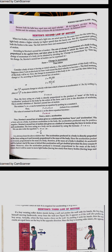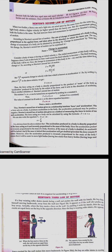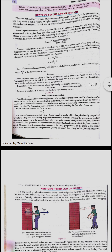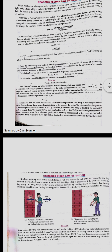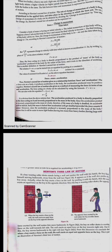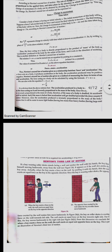The second law of motion gives the quantitative measure of force through momentum. According to the second law, the rate of change of momentum with respect to time is directly proportional to the force applied. Force equals change in momentum divided by time. Since momentum is defined as mass times velocity (p = mv), the change in momentum is mv minus mu over time, which simplifies to m(v−u)/t. Since (v−u)/t is acceleration, we get F = ma. Newton's second law gives the relationship between force, mass, and acceleration.